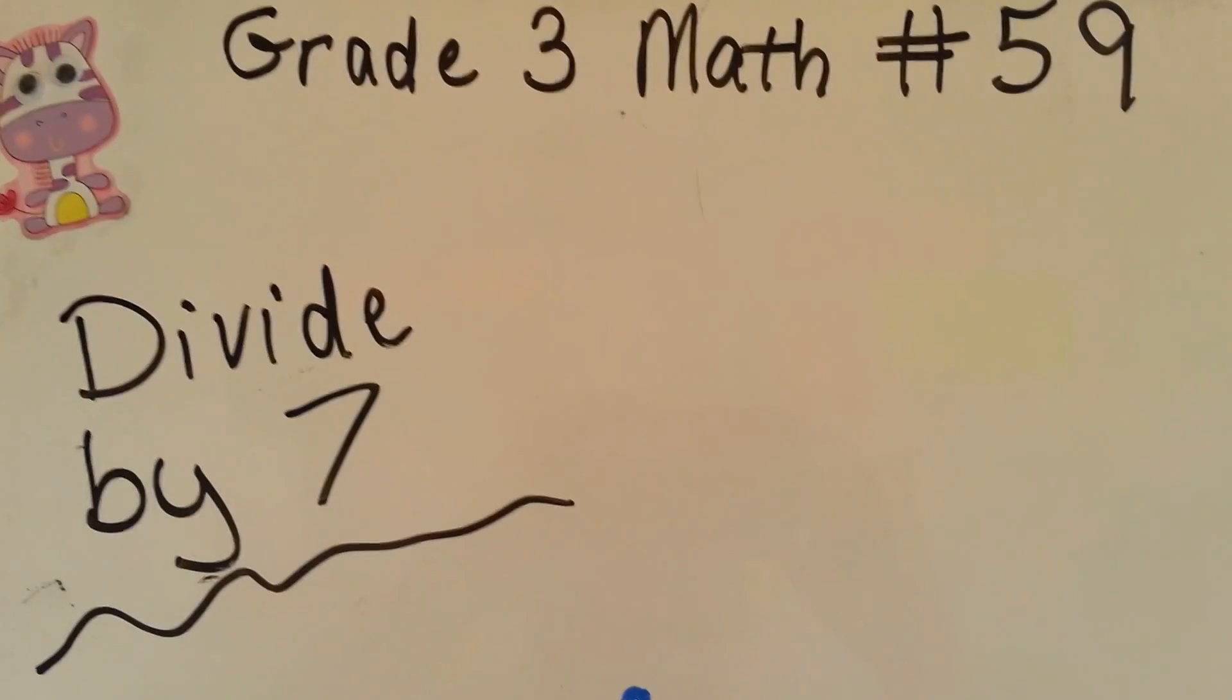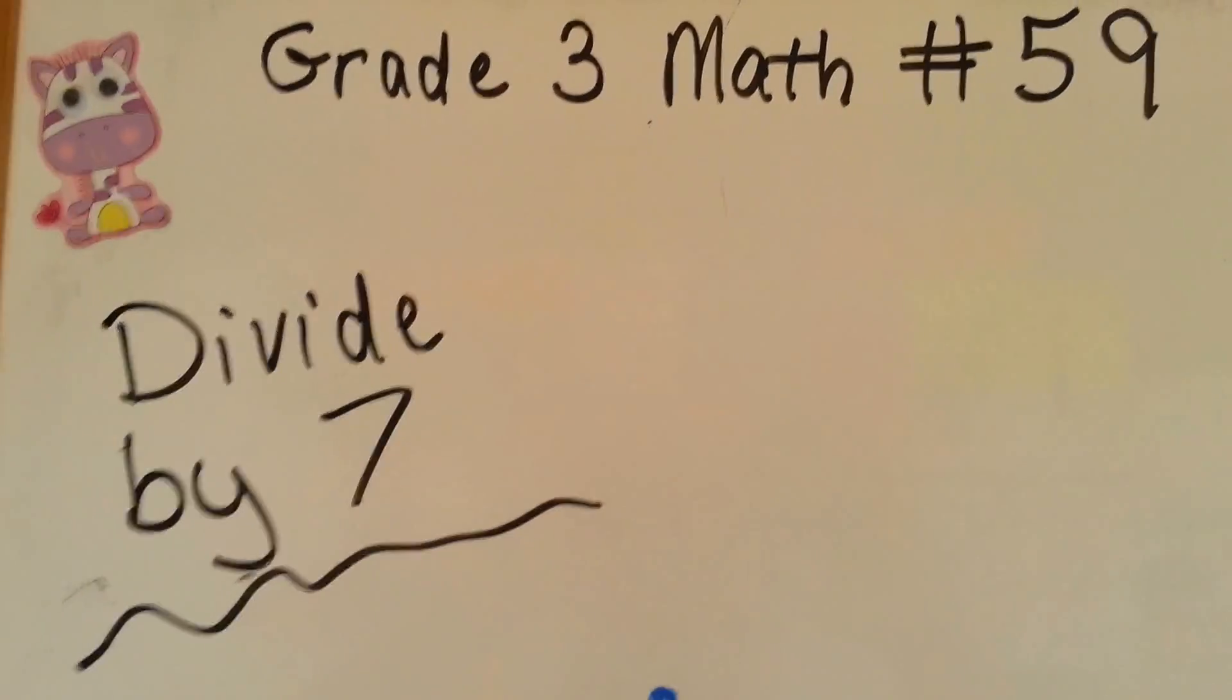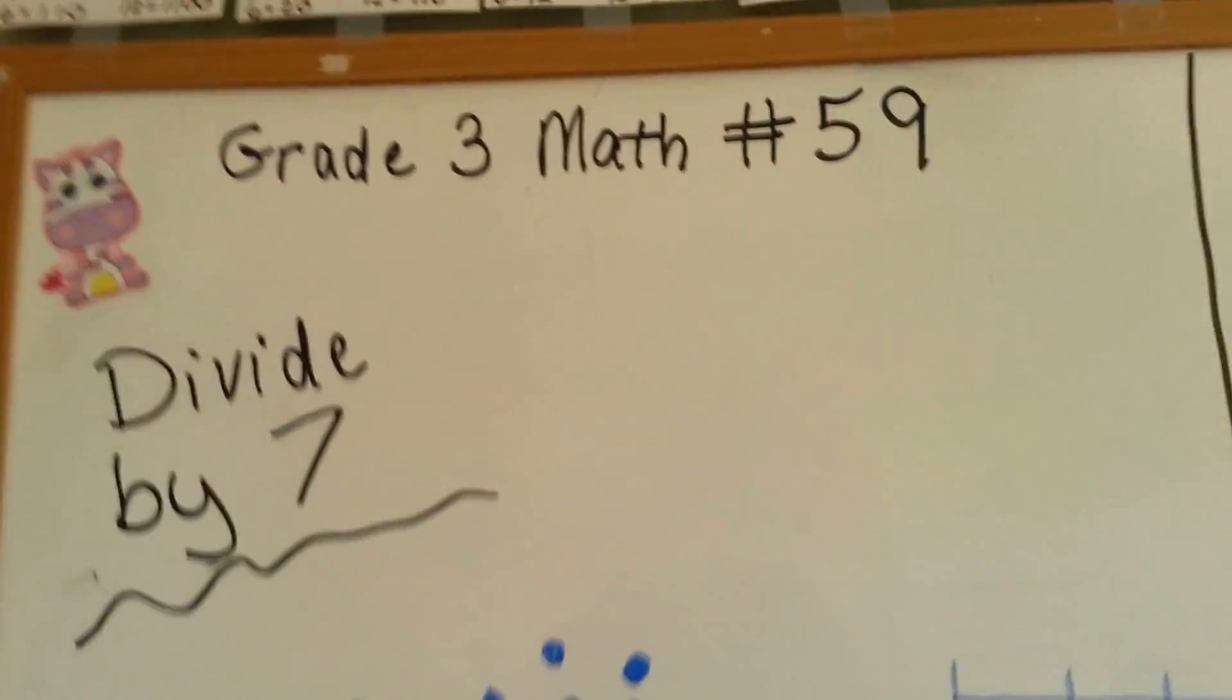Grade 3 math, number 59. Divide by 7. We've been doing lots of division lately, and now we're at the 7s.